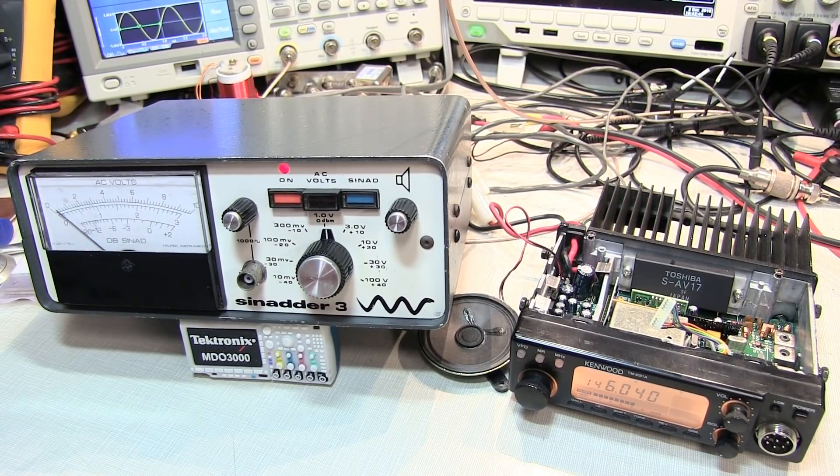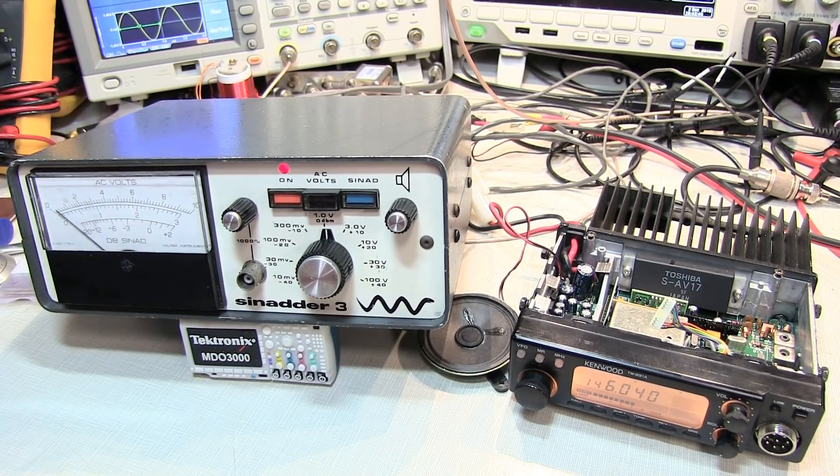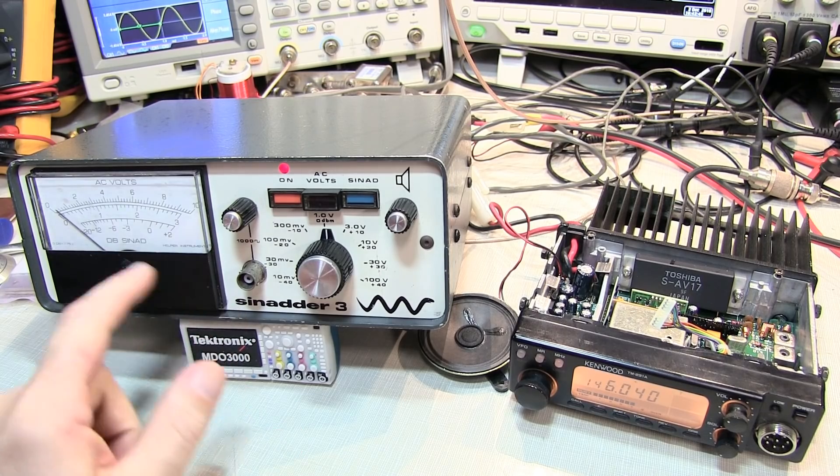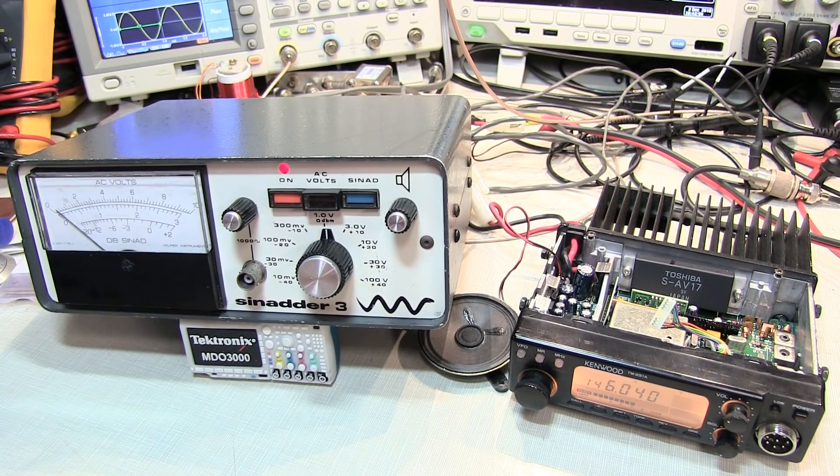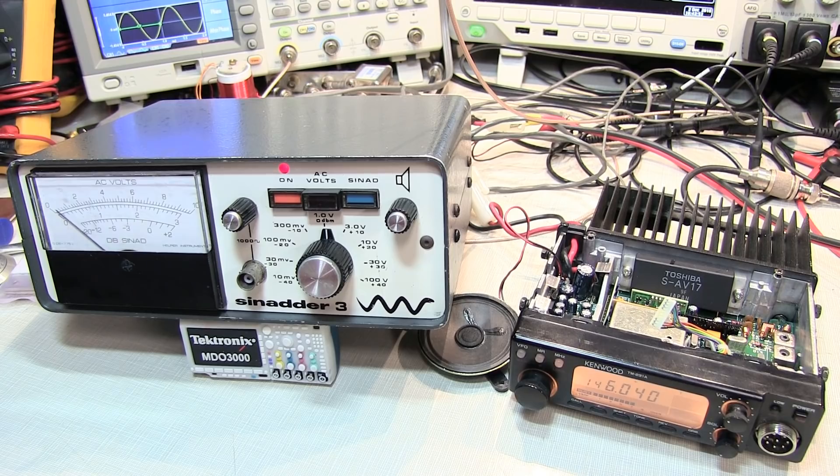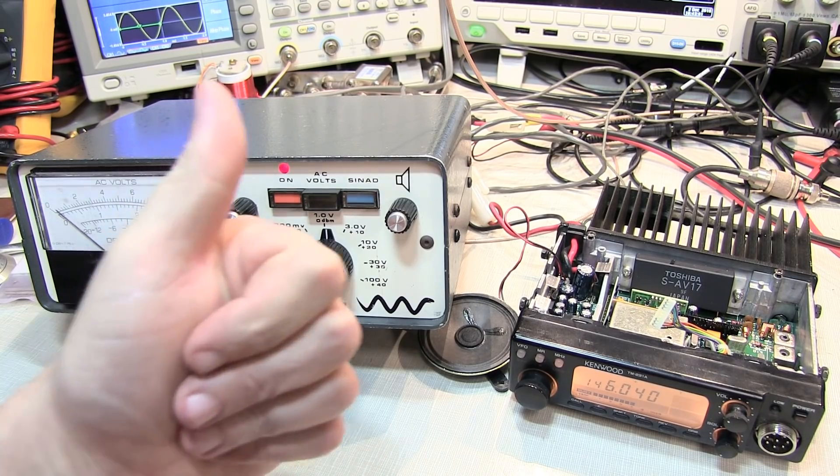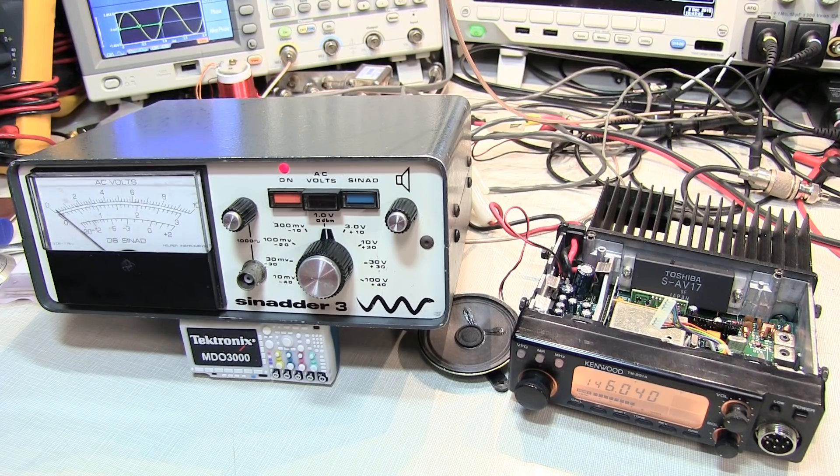So I hope you enjoyed your look at this Sinadder 3. Learned a little bit more about what SINAD is and how it's measured by the Sinadder 3 and then how that can be used to aid in the alignment of an FM receiver such as this Kenwood 2 meter transceiver. If you like what you saw give me a thumbs up, if you haven't subscribed already please do so. And thanks again as always for watching. See you next time.